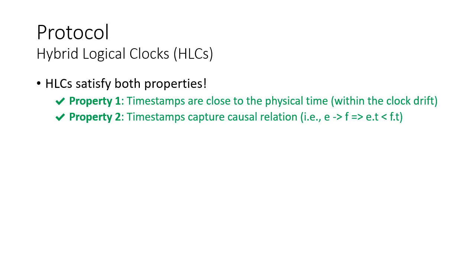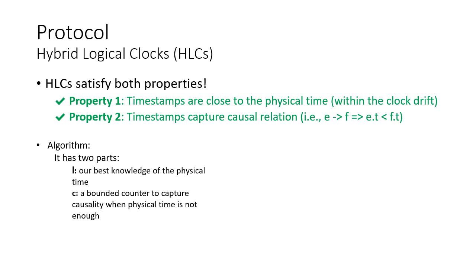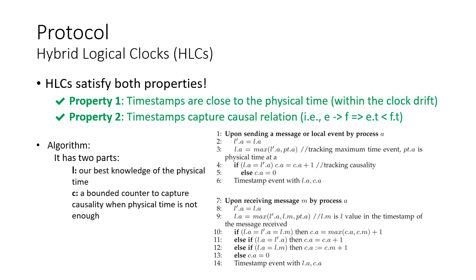Hybrid logical clocks satisfy both property 1 and property 2, giving them all the benefits mentioned for both logical and physical clocks. For example, this allows HLCs to determine the correct winner version in both scenarios we mentioned. HLC has two parts: the first part, denoted as L, is our best knowledge of physical time; the second part, denoted as C, is used to capture causality whenever physical time is not sufficient due to physical clock anomalies. The algorithm to update HLCs is shown on the right — you can pause the video to read it more carefully.